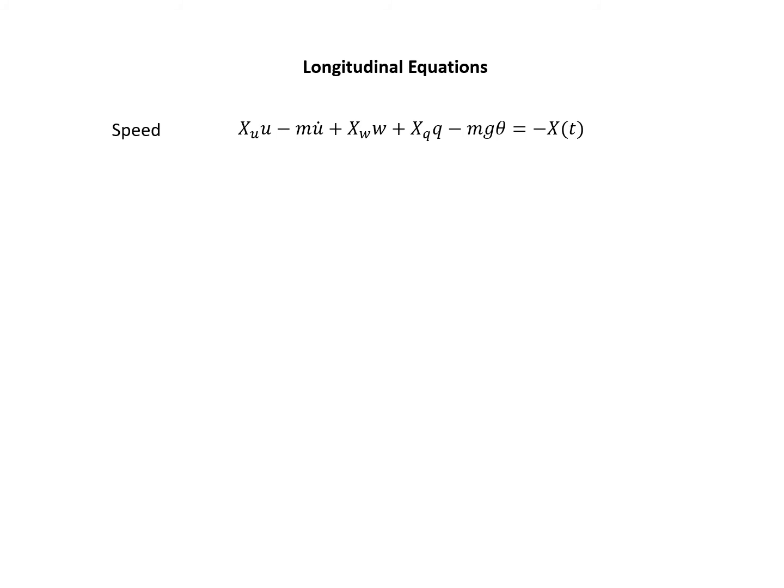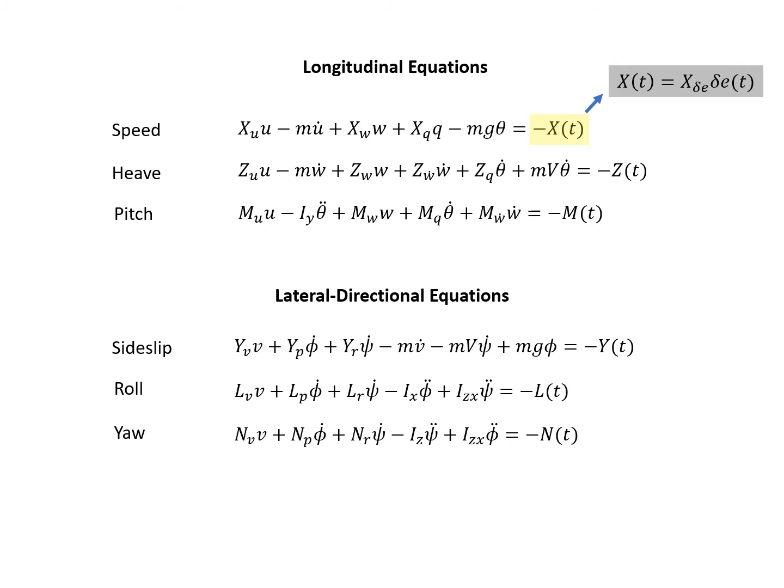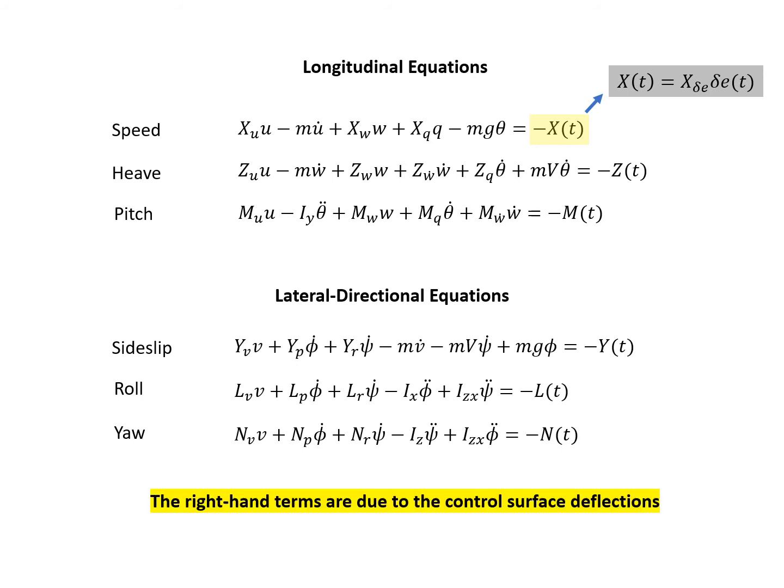Rewriting the simplified X force equation, the right-hand side is further condensed as −Xt for easier notation. For the remaining five equations, they can be written down similarly — the right-hand terms are due to control surface deflections. Now we consider the governing equations in non-dimensional form, which is more useful when analyzing different types of aircraft.